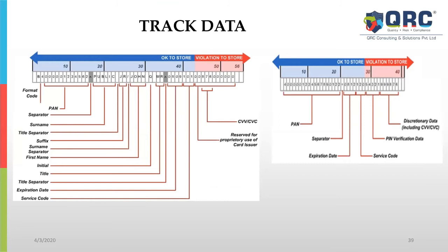This is a typical anatomy or dissection of track data, which is present on the back of the card. There are various bits present. This is to understand what track data generally consists of — it contains separator, surname, title separator, suffix, first name, expiry date, service code, and CVV, among other elements. Since it stores CVV and your name, this data is prohibited to be stored by any entity handling card-present transactions.